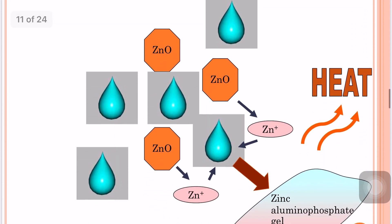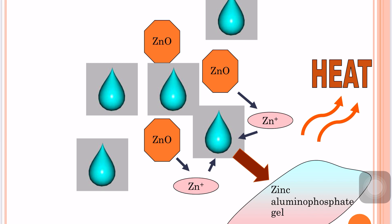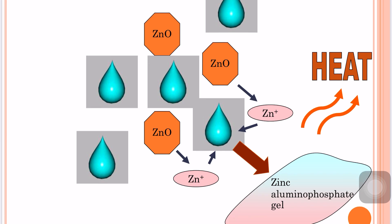This schematic diagram represents the setting reaction. When powder and liquid are mixed, zinc free ions are liberated. These zinc ions, along with aluminium and phosphate ions, react to form zinc aluminium phosphate gel. In this process, heat is liberated, which is why this reaction is called an exothermic reaction.